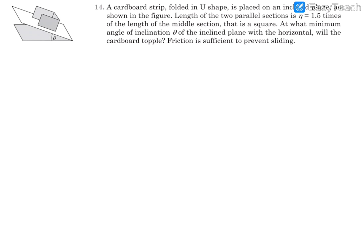Equation number 14. It says that there is a cardboard strip folded in a U shape and placed on an inclined plane. The downside portion is of square shape with length L on each side. This length is eta times L, where eta is 1.5. The height is L because it is square shaped.